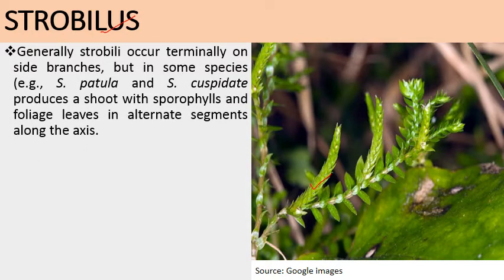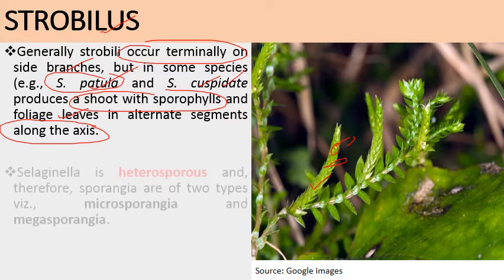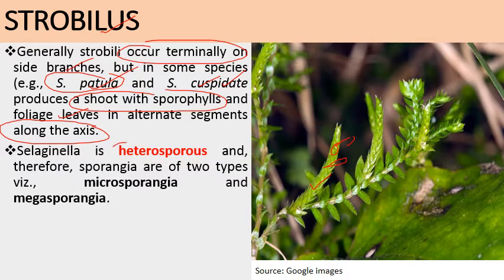Generally strobili occur terminally on the side branches, but there are some exceptions. In case of Selaginella patula and Selaginella cuspidata, meristematic activity continues and produces foliage leaves along with sporophylls alternately. So in these species, one axis bears both foliage leaves and sporophylls in alternate segments. Most Selaginella species are heterosporous.